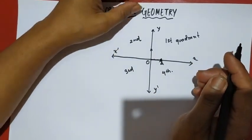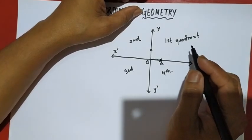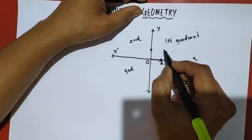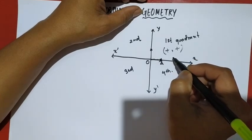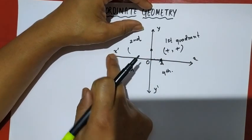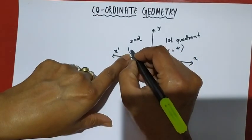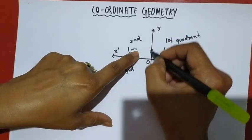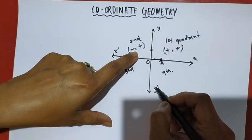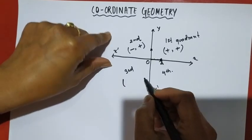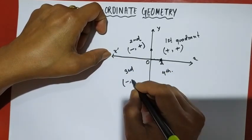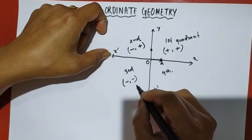Then we will find the first quadrant and second quadrant. The coordinates are 0. The first quadrant is Fc is 0. The second quadrant is 0. The third quadrant: x minus and y minus, so on the third quadrant it is minus, minus.